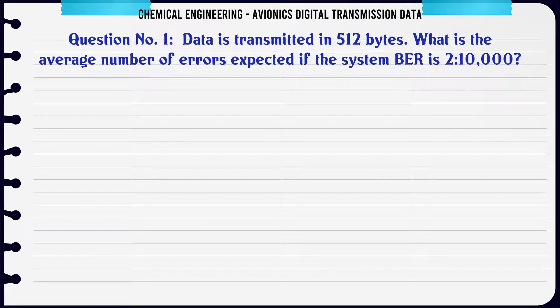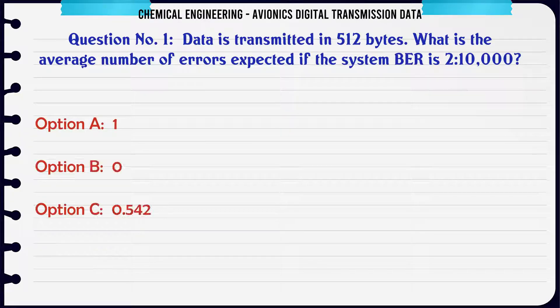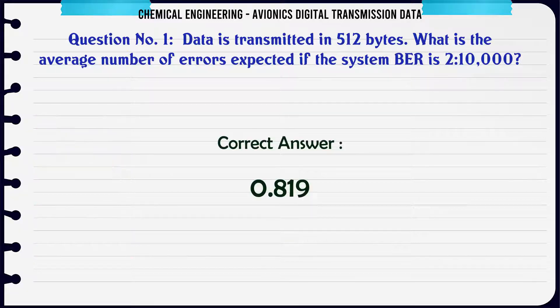Data is transmitted in 512 bytes. What is the average number of errors expected if the system BER is 2×10⁻³? A: 1. B: 0. C: 0.542. D: 0.819. The correct answer is 0.819.